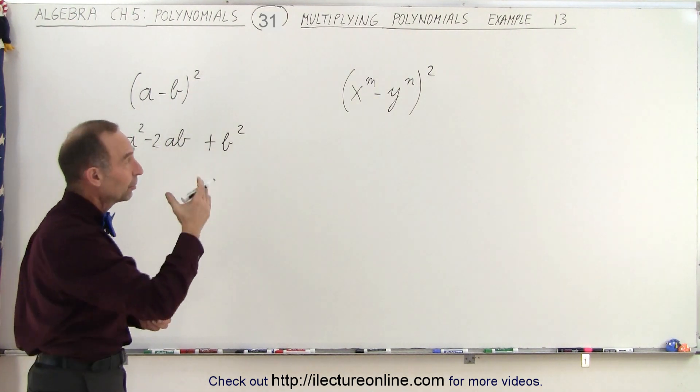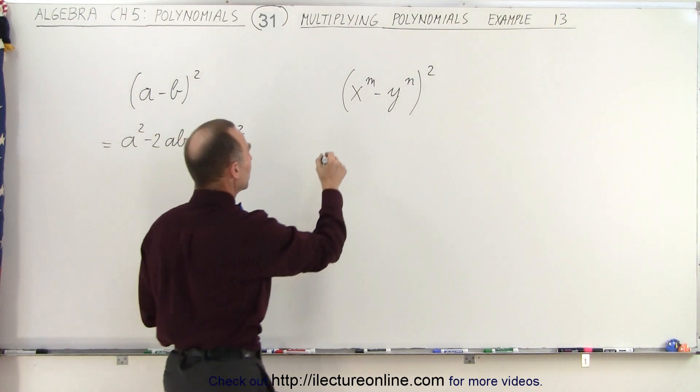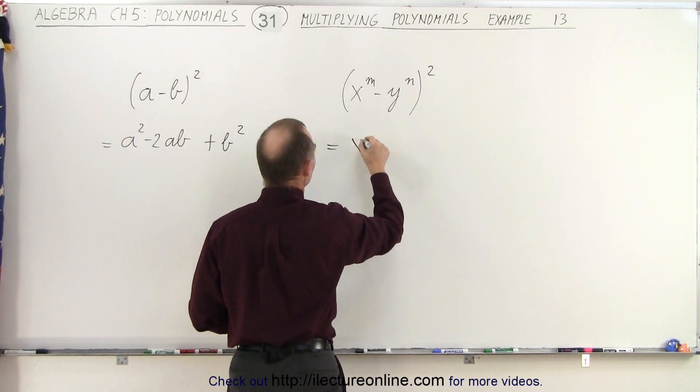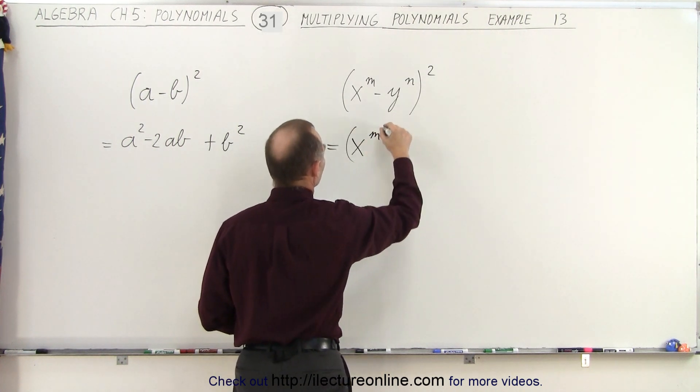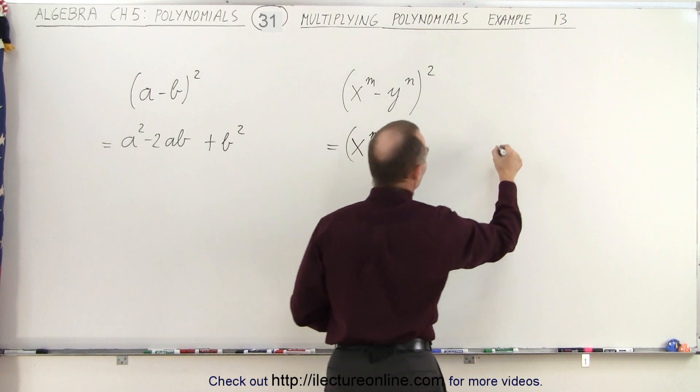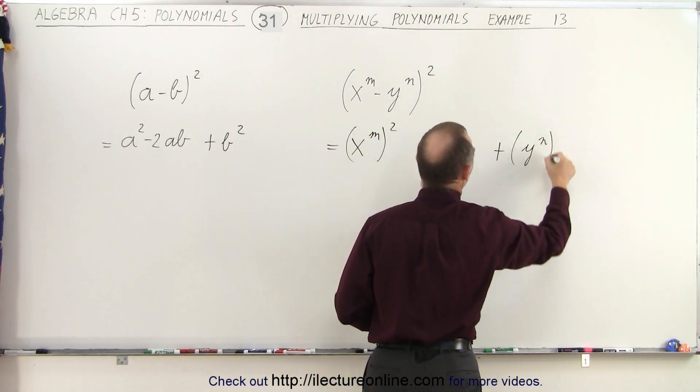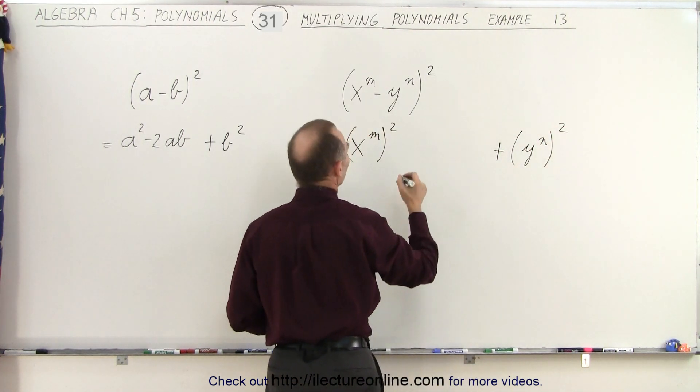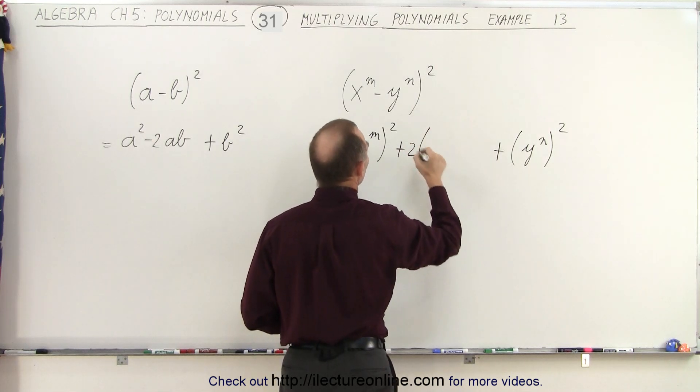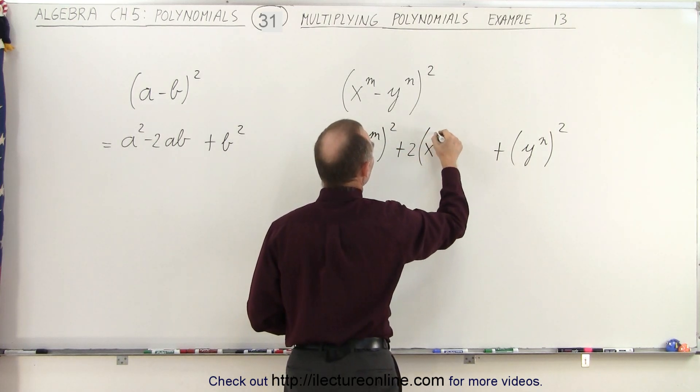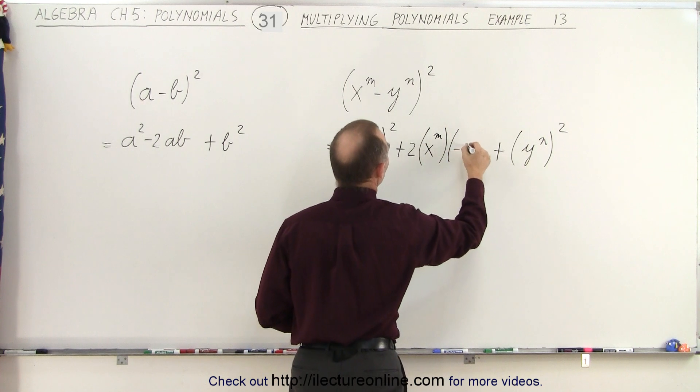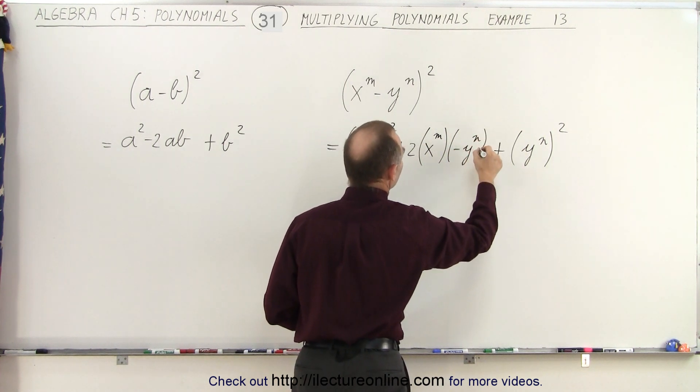So we're going to do the same to this one right here. This has to be the first term squared, plus the last term squared, and then plus 2 times the product of these two would be X to the M times minus Y to the N.